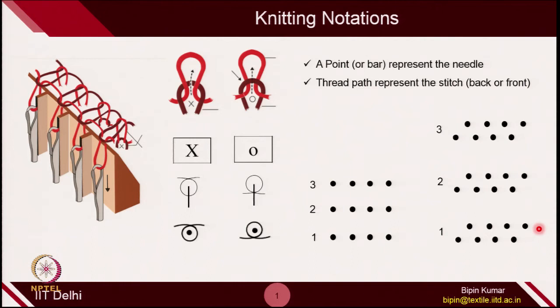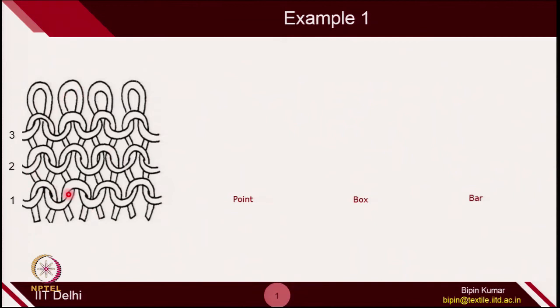Double bed machines can create rib or interlock fabrics. If you run multiple courses on a double bed machine, you keep continuing the double needle arrangement. You first create or select the number of needles doing the knitting, and then represent those needles multiple times depending on how many courses you are going to create. For example, in this fabric you can see there are 3 courses, denoted by 1, 2, and 3.